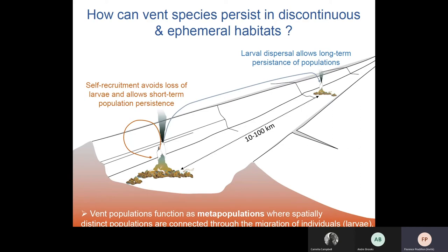One long-lasting question at vents is how can vent species persist in time in a discontinuous and locally ephemeral habitat. Most benthic marine species have a pelagic phase during which migrants are exchanged between populations, and this pelagic phase occurs early in the life cycle at the larval stage, which means that most of the exchanges between populations are made through larvae. The fate of larvae in the water column may allow population persistence both locally through self-recruitment on the site of origin.